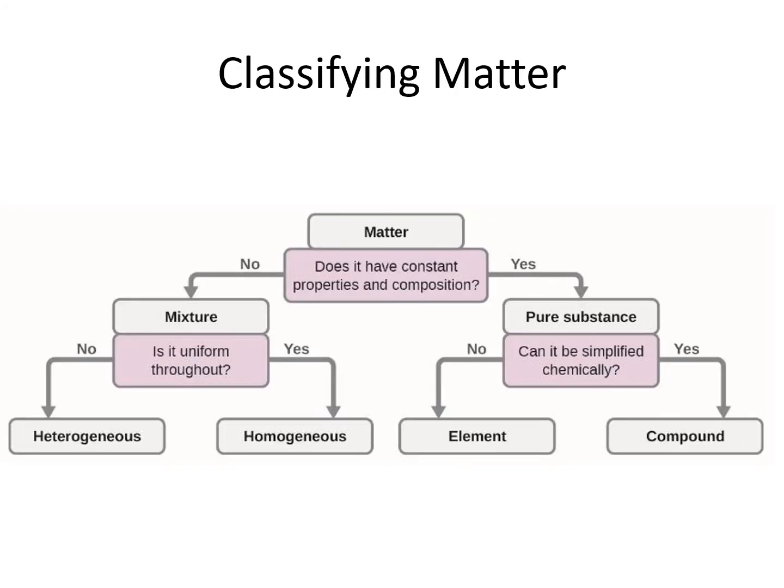We can classify matter into two broad categories: pure substances versus mixtures. Each of those categories has two subcategories. Pure substances can be either elements or compounds, and mixtures can be either homogeneous or heterogeneous. We will look at each of these in a little more detail.